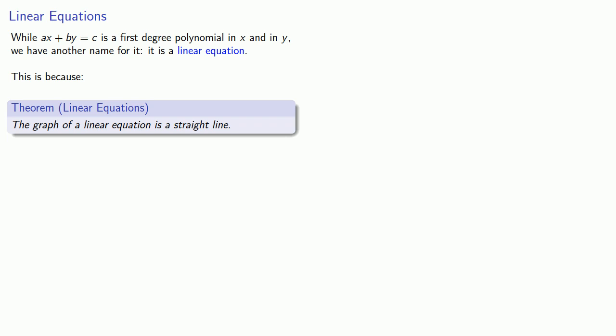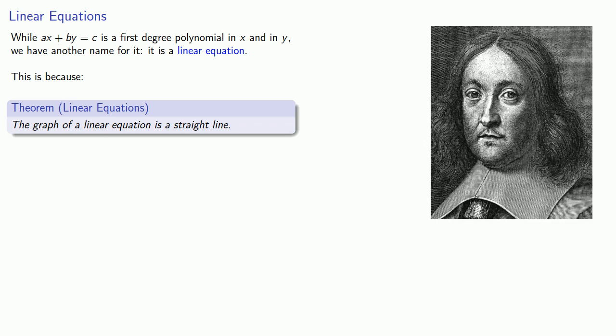Now, before we continue, we should point out something important. Fermat said that any equation in two variables corresponds to the graph of some curve. But this particular equation in two variables gives us a straight line. And what that means is that we have to consider a straight line to be a curve. Now, a normal person doesn't typically regard a straight line as a curve, but mathematicians aren't normal people.